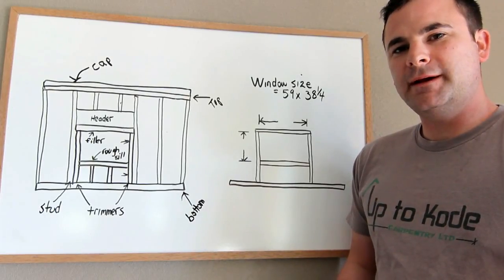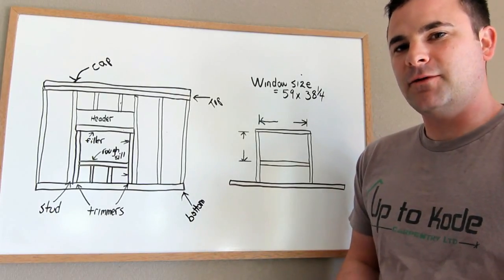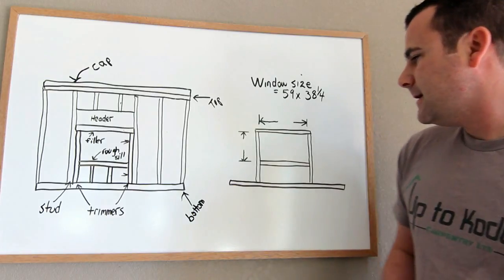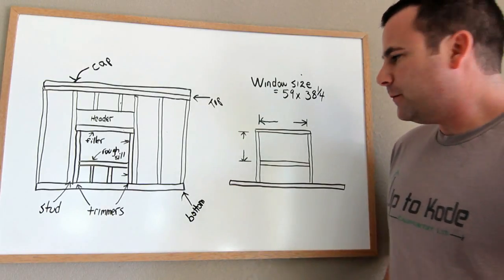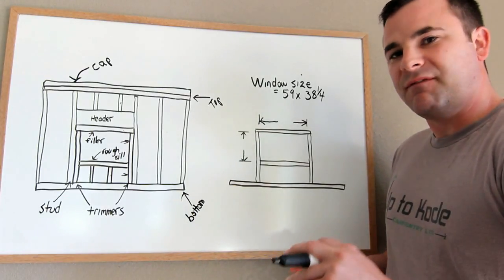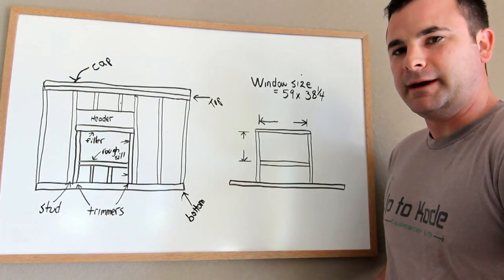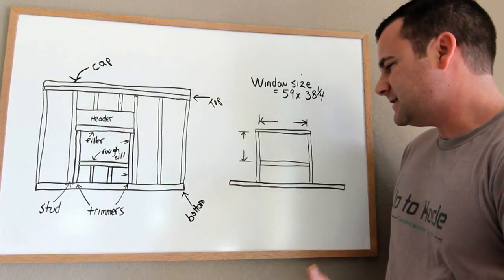I want to describe rough opening, how to determine the size of a rough opening for a window. The rough opening basically is just the framed size of the opening so that the window can fit inside.